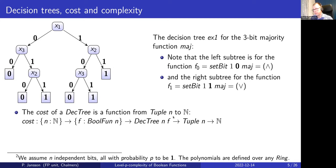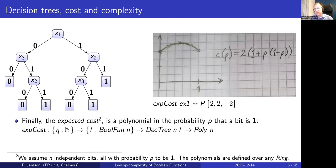The cost of a decision tree is a function from a tuple to a natural number: for that tuple, how far down the tree you got before getting an answer. For example, the cost of the tuple (1,1,anything) is 2 — you asked two questions. If it's (1,0,1) the cost is 3. These four cases have cost 3, this case represents two different tuples with cost 2, and this also has cost 2.